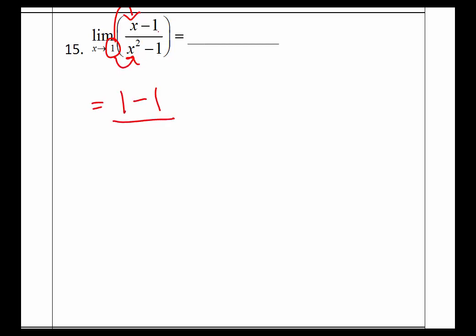That gives us 1 minus 1 divided by 1 squared minus 1, which equals 0 divided by 0. This is the indeterminate form, which says that now we need to go back to the original function and factor.